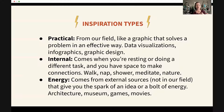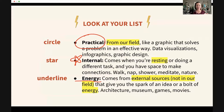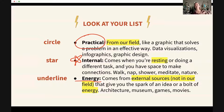I want you to think about how sometimes we don't focus on one type more than another. I'm going to venture to guess you probably have a lot of practical inspiration and maybe that's the first thing you even thought of. So right now, mark up your list: circle things that are practical inspiration — things from our field. Put a star next to internal inspiration — things where you're resting or doing a different task, giving your brain space to make connections. And underline things that are external sources not in our field that give you a spark of energy.